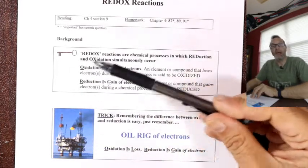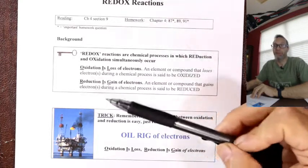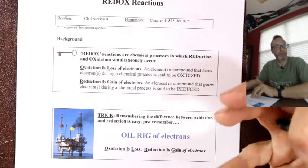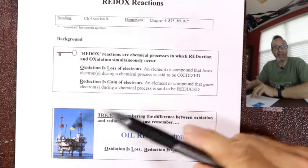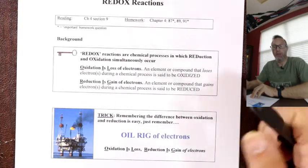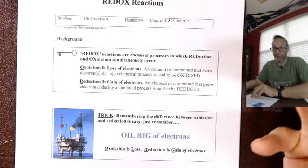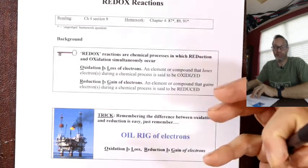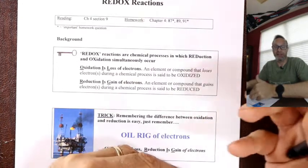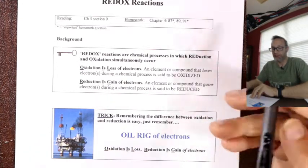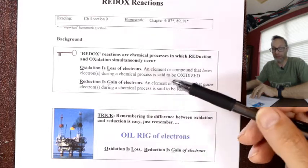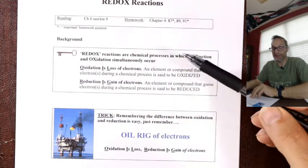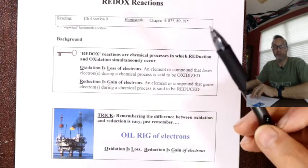Every time an ion pair is formed — think about forming sodium chloride — Na bumps into Cl, two neutral atoms, and the electron jumps over. The thing that gains the electron becomes minus, the thing that loses becomes plus, and then you've got a plus and minus ion and they stick together. Ionization is actually a redox process.